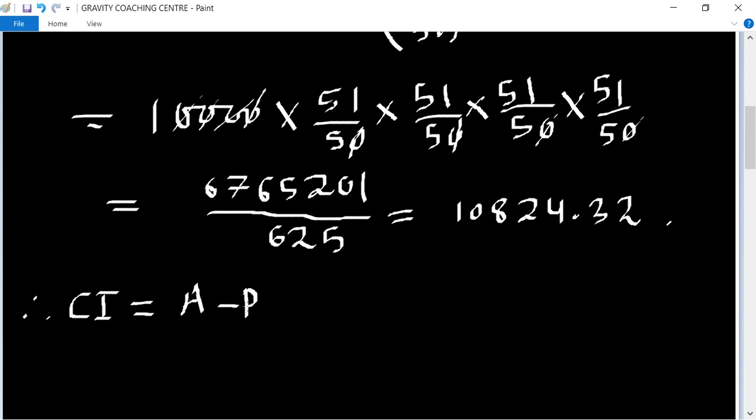Amount equals 10,824.32 minus principal 10,000 equals 824.32 rupees.